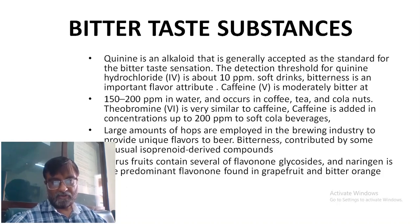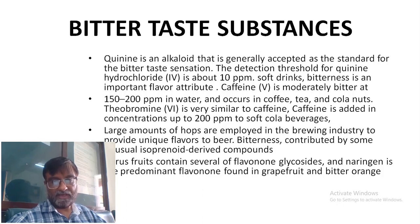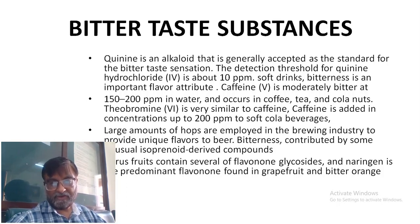Hops are bitter substances added into beers — beer has a specific bitterness contributed by some unusual isoprenoid-derived compounds. Citrus fruits contain several types of flavonoid glycosides; for example, naringin is a predominant flavonoid found in grapefruit and some bitter oranges.